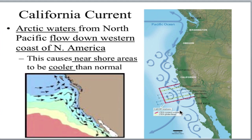This cold ocean water cools the air above it, creating cooler than normal temperatures for people in San Francisco. Have you ever noticed that surfers in California wear wetsuits, while surfers in Florida or Hawaii don't? The whole reason why surfers in California have to wear wetsuits is because of this cold California Current coming from the northern latitudes.